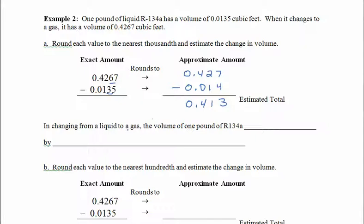So, in changing from a liquid to gas, the volume of one pound of this refrigerant did what? Let's see, the gas had the larger volume, so this increased by, and this is a rounded value, so we might say by about 0.413, and the units here are cubic feet. There. Alright, let's try again.